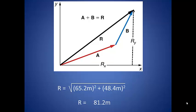Now that we know two sides of our resultant triangle, we can determine the resultant vector using the Pythagorean Theorem. We take our 65.2 meters, square it, and add it to 48.4 meters, squared. The square root of that is 81.2 meters. So our displacement from our start point to our end point was 81.2 meters.